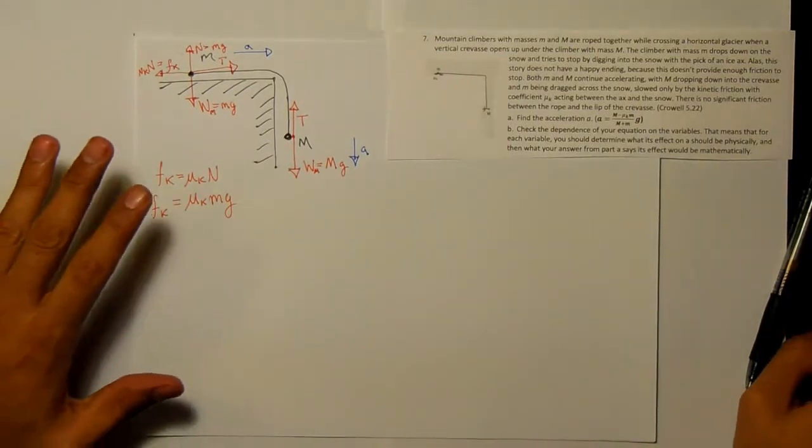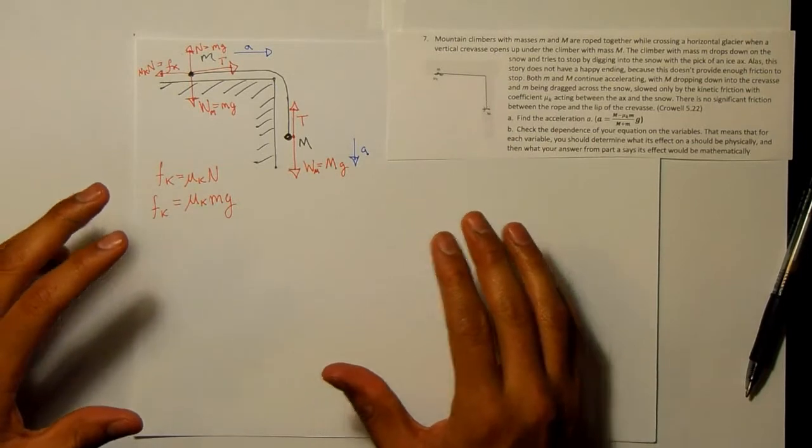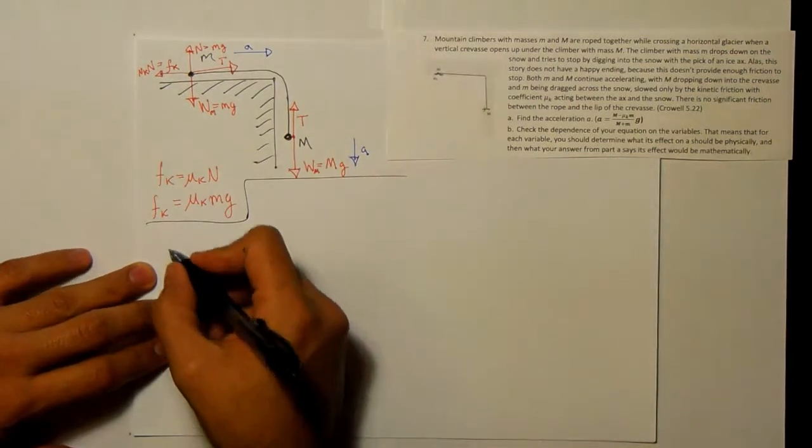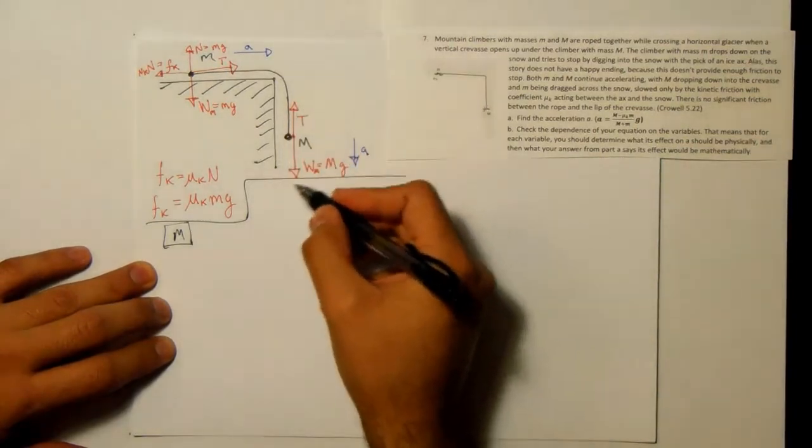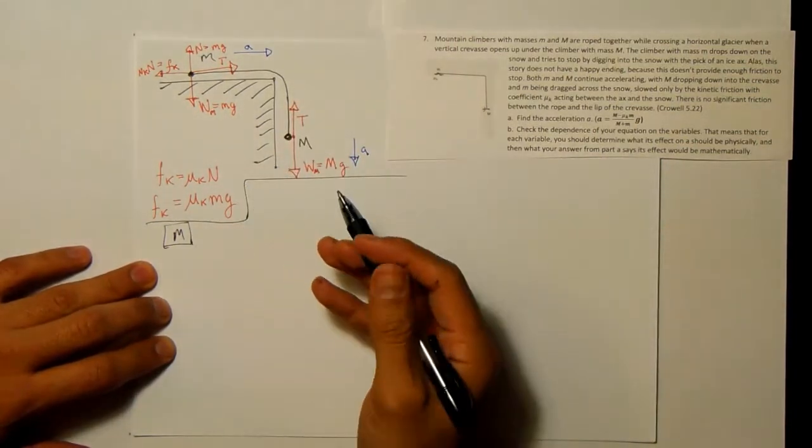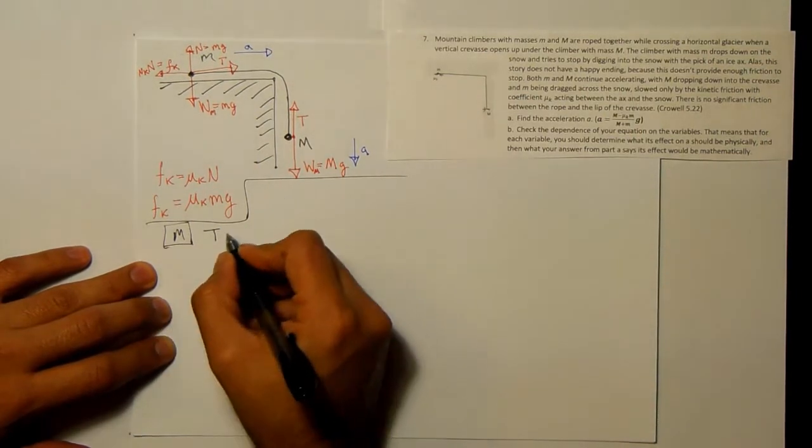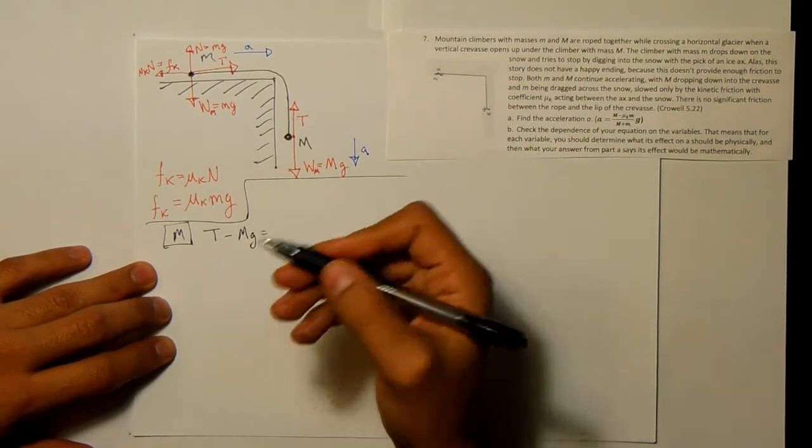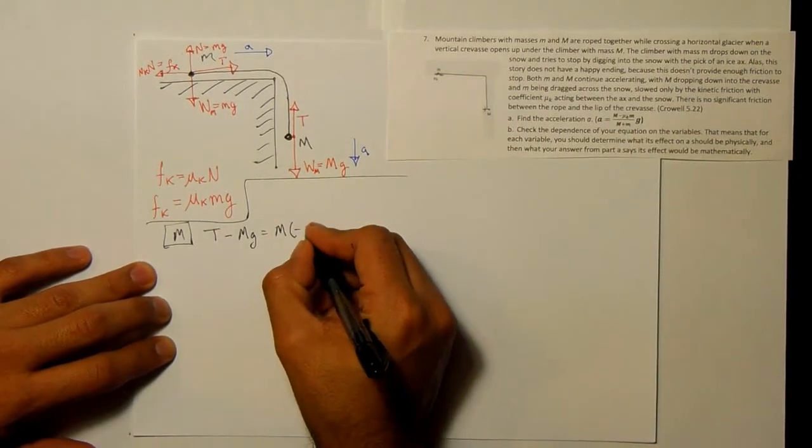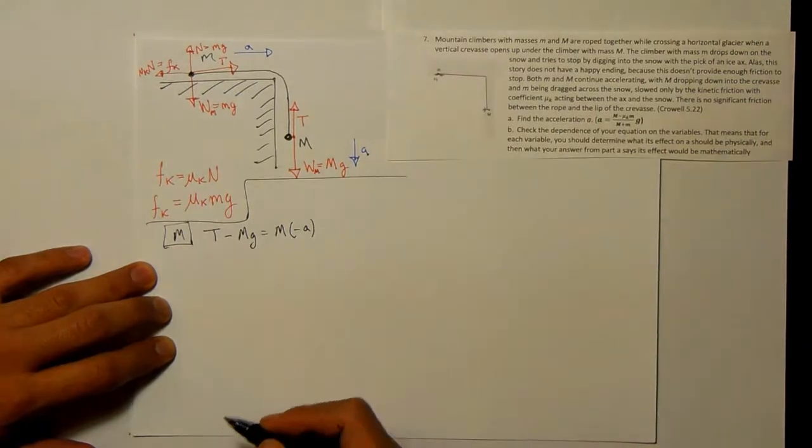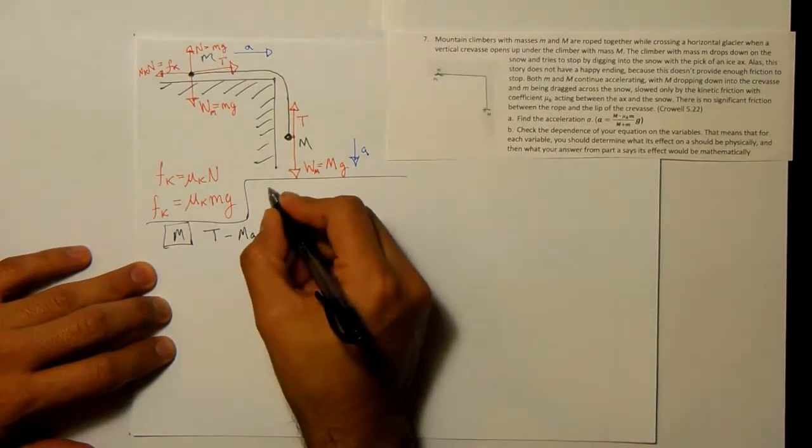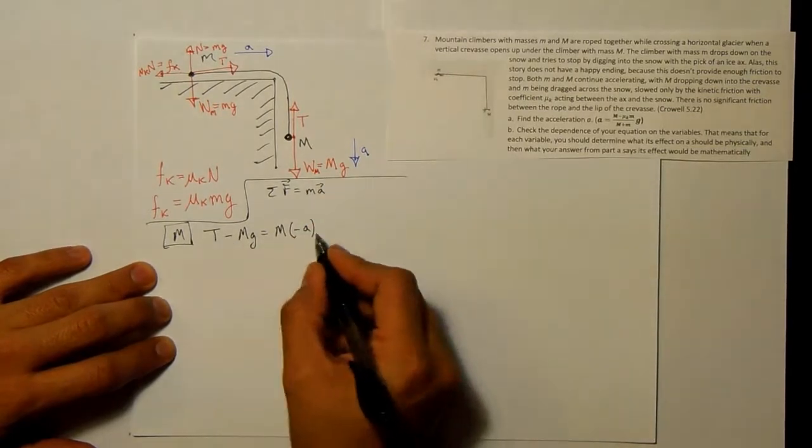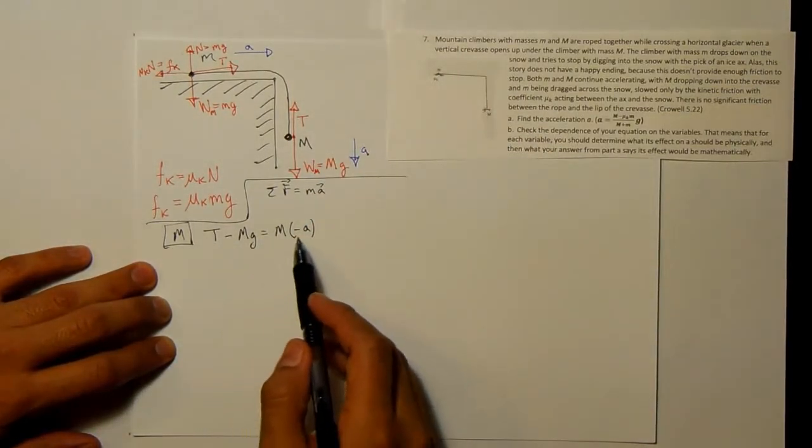Okay, so let us do sum of forces on each of these and write the F equals ma for each of them. So for let's do this one first because it has less forces, it's easier. So for big M, if I write my sum of forces and if I take the upward direction to be positive, then I'm going to write that the tension minus the weight, which I'm going to write as Mg, is equal to my mass times my acceleration. But my acceleration is going down, so it's negative a. And this is just sum of forces equals mass times acceleration. And I'm doing this in the y direction.